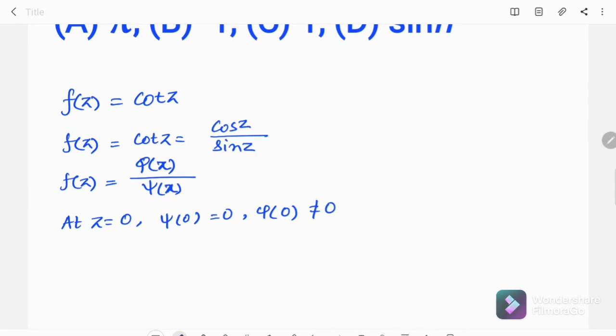We have z equal to 0, that point is a singular point and we can also see that ψ'(0), that is the first derivative of ψ at z equal to 0, is not equal to 0.